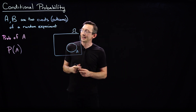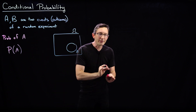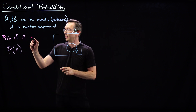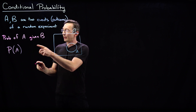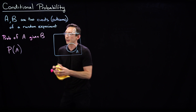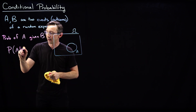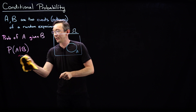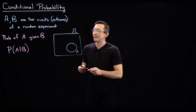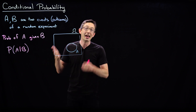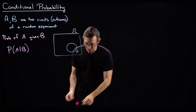The question we're going to ask today is: what is the probability of A, given that we know event B happened? We write this as P(A | B) — probability of A given B. This notation with the vertical bar means: what's the probability of event A happening if I know for a fact that event B actually happened?